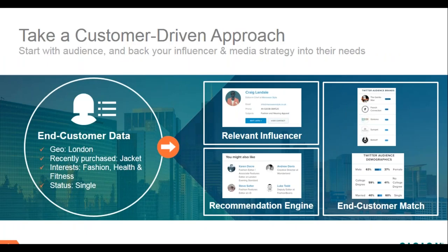With Cision, communicators can take a customer-driven approach to their influencer strategy. They start with data about their customers — including behaviors, attributes, and preferences. Using that data, Cision Comms Cloud will generate the right influencers to reach through earned media campaigns. Communicators can base queries on topic or audience interests and see details about the audience makeup of those influencers. As communicators use Cision Comms Cloud, the system gets smarter and gives specific recommendations for influencer outreach.